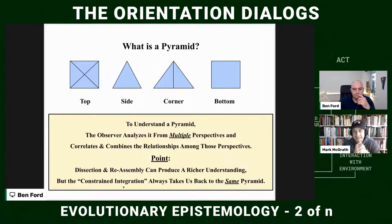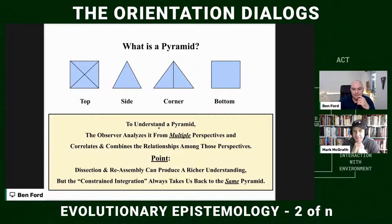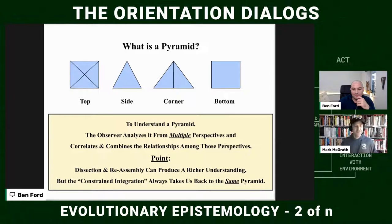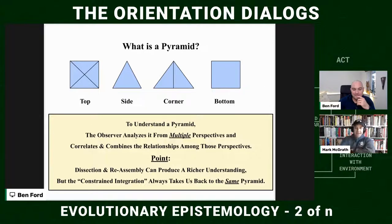The only person who's ever gotten that test on the first try was my dyslexic son. The first thing I showed him was a square with an X, and he said, 'Dad, that's a square — it's either a square with an X or the top of a pyramid.' He was 11 or 12 at the time. Bam — nailed it. One of his massive gifts is being able to see things from incredible perspectives that nobody else thinks of.